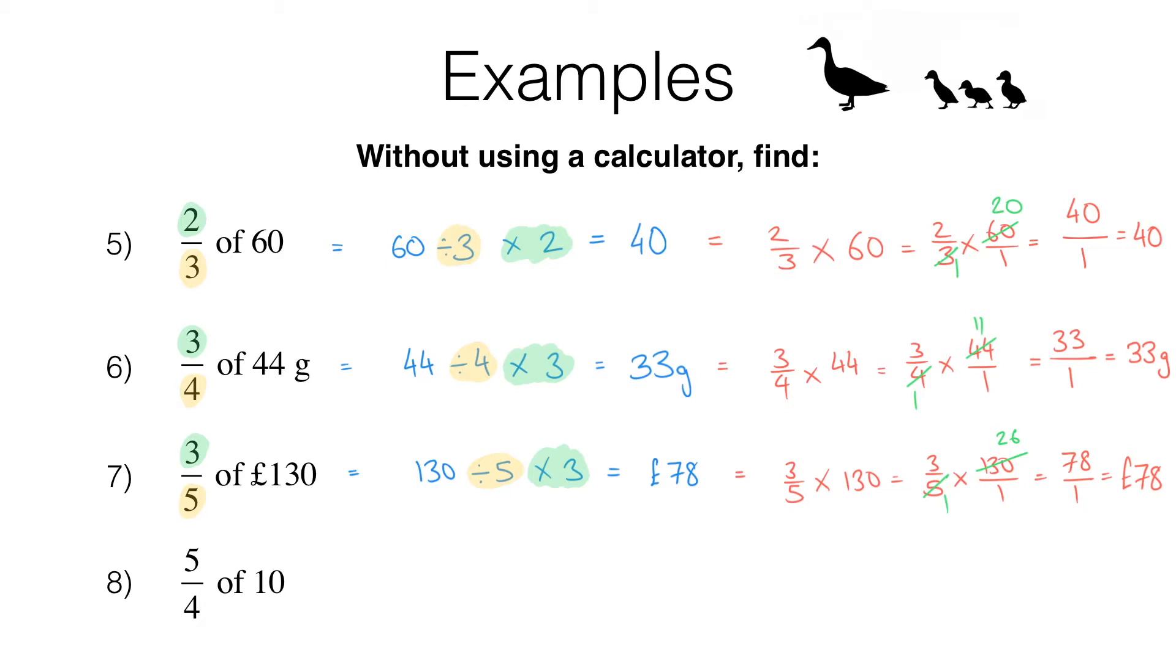In question 8, we have to find 5 quarters of 10. Now, don't be put off that this is an improper fraction where we've got a bigger number on top. We're going to follow the same method as we've been doing here in blue. So that gives us 10 divided by the denominator. That's 4. And then we multiply by the numerator. That's 5. And you can see this matches what we've done before. Now, 10 divided by 4 is 2 and a half, or 2.5. And when we multiply that by 5, we get 12 and a half, or 12.5. So that's the answer.